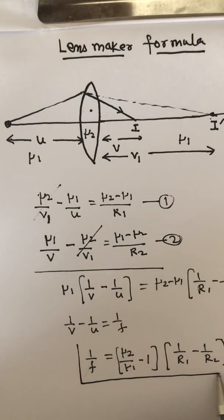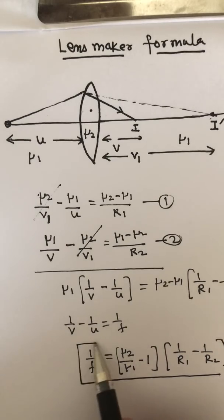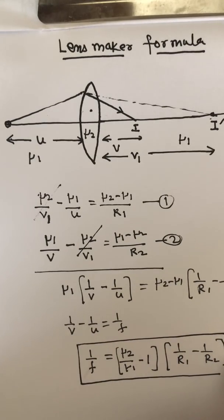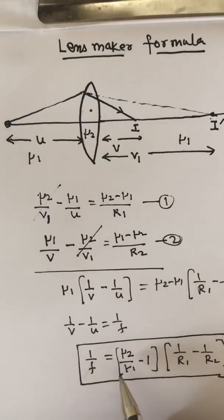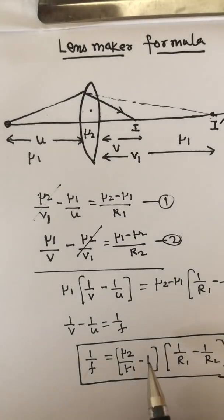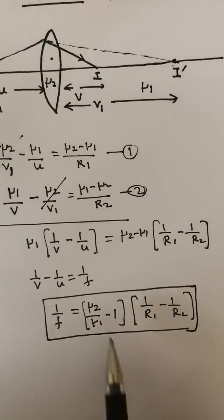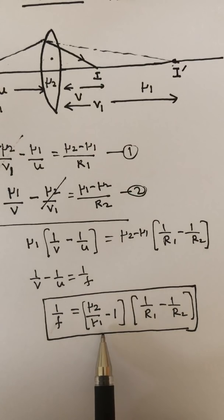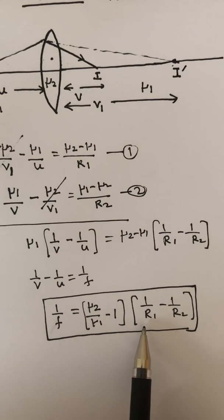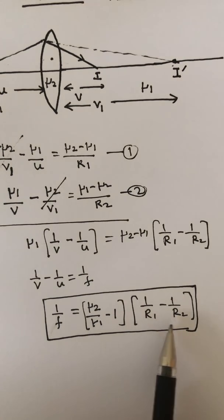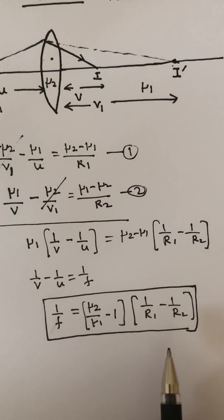This is called the Lens Maker's Formula. In this formula, mu2 is the refractive index of the lens, mu1 is the refractive index of the medium, R1 is the radius of curvature of the first surface, and R2 is the radius of curvature of the second surface. So this is the lens maker's formula.